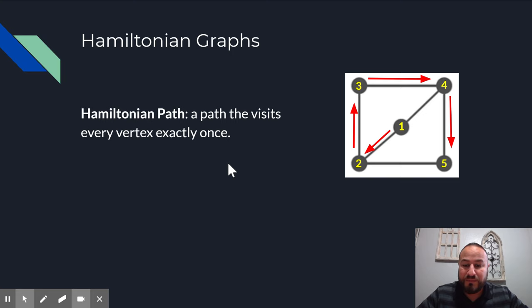And these graphs come in paths and circuits, just like Eulerian. And so a Hamiltonian path is a path that visits every vertex exactly once, just like a Eulerian path is every edge exactly once. Hamiltonian is every vertex exactly once. And you can see in the graph right here, one, two, three, four, five, I went to every vertex exactly one time. I didn't start and end at the same spot though. So that's why it's just a path.